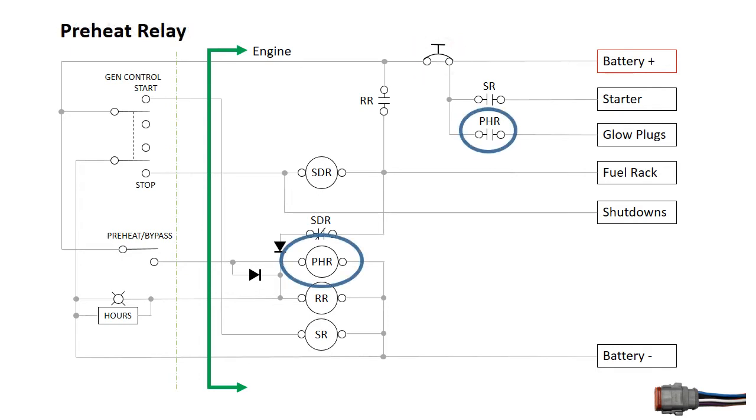The preheat relay controls power to the glow plugs for cold engine starts. The start relay controls power to the starter solenoid. The run relay is active while the engine is running and supplies power to the fuel rack solenoid and other ignition loads.